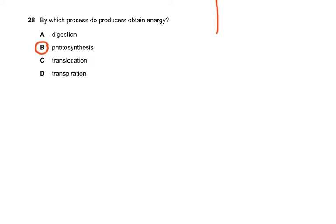Question 28: By which process do producers obtain energy? Photosynthesis. There's no other way. Producers are plants and they obtain their energy from light energy to chemical energy. So it's by photosynthesis, not by digestion, not by translocation, not by transpiration.